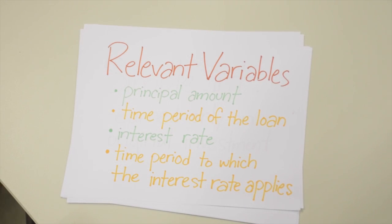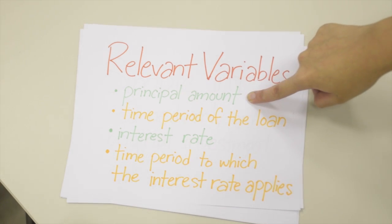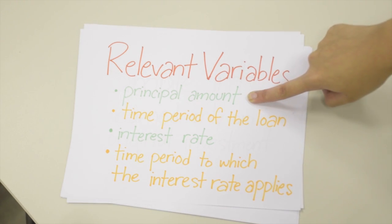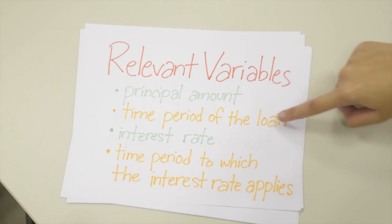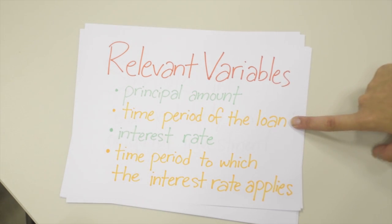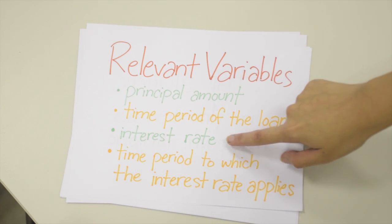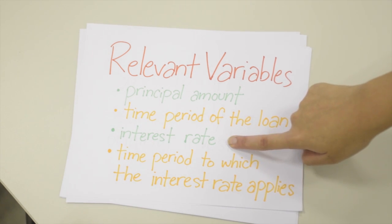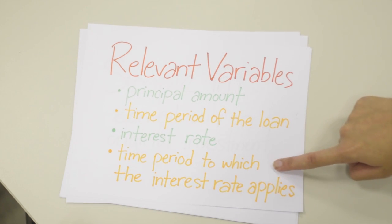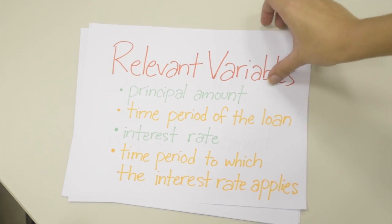Here are the four relevant variables in dealing with the time value of money. First is the Principal Amount, which is also called the Initial Amount Lent. Next is the time period of the loan. The other one is the interest rate. And lastly is the time period to which the interest rate applies.